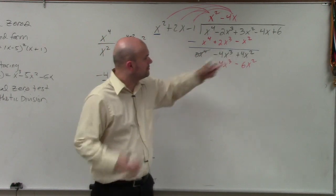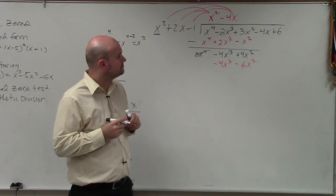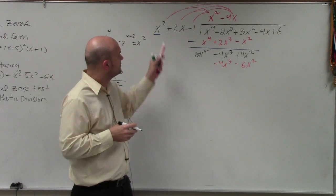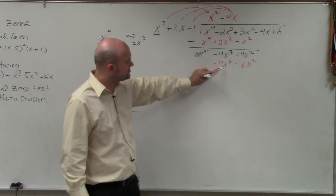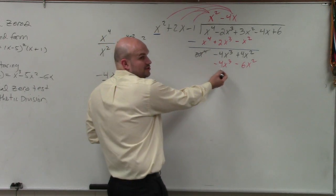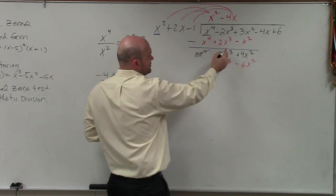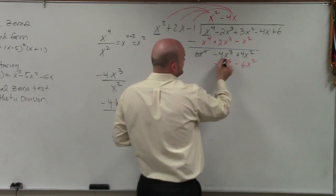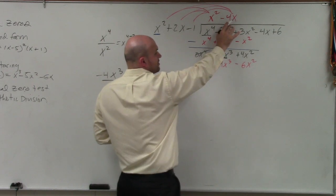So x squared goes into negative 2x cubed. Here. No, no. You're not going back up to this one. You're doing this one. So x squared, you're always going back to the front term of the divisor. So we first did this one. We subtracted the rows. Now we're doing this one. x squared goes into 4x cubed, negative 4x squared times.